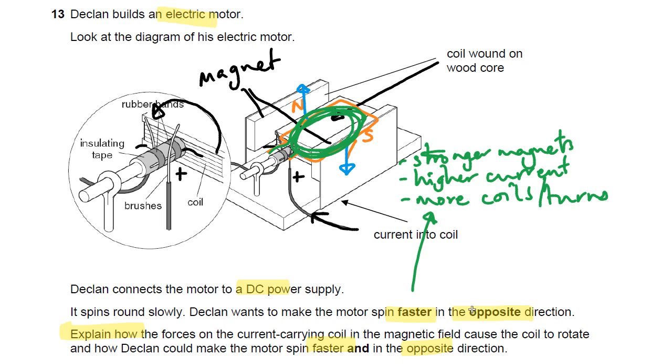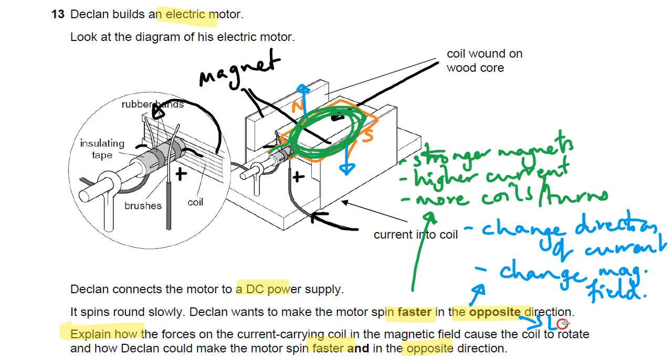And then, how would you change the direction? You're going to list those things, what you can do to change the direction. You can change around the direction of the current. So you can change from positive to negative to negative to positive. You can change the direction of the magnetic field. And you must really say for this that it's the interaction of the field and the current that determines the direction that it's going to spin. And that is Fleming's left-hand rule. So here's where you would talk about the left-hand rule.